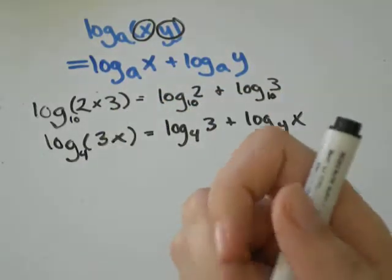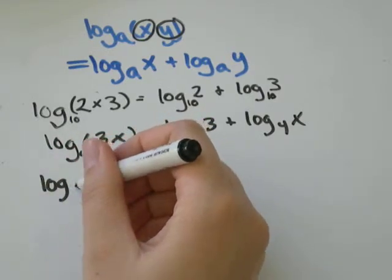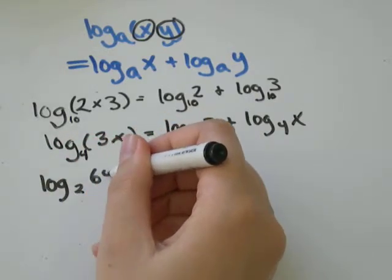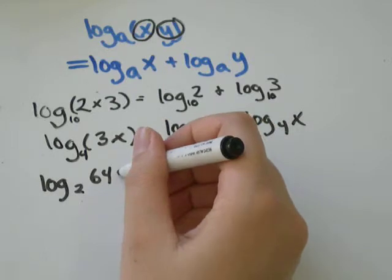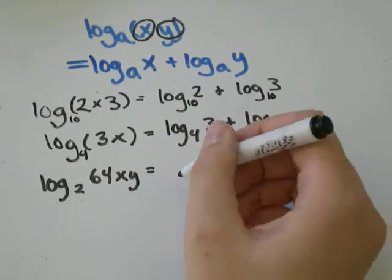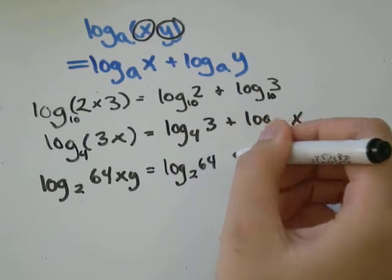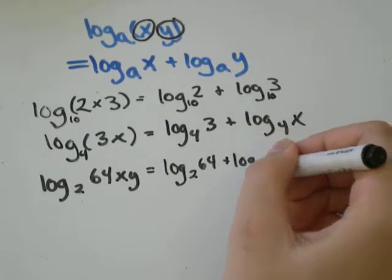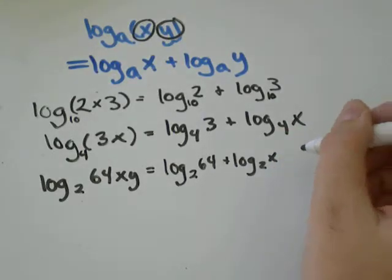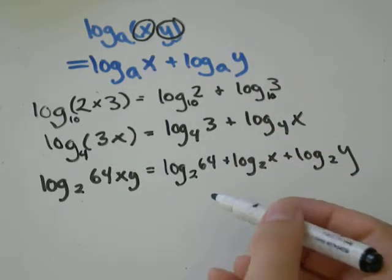Let's do one where there's three things being multiplied. If it was log base two of 64 times x times y, that would just be log base two of 64 plus log base two of x plus log base two of y.